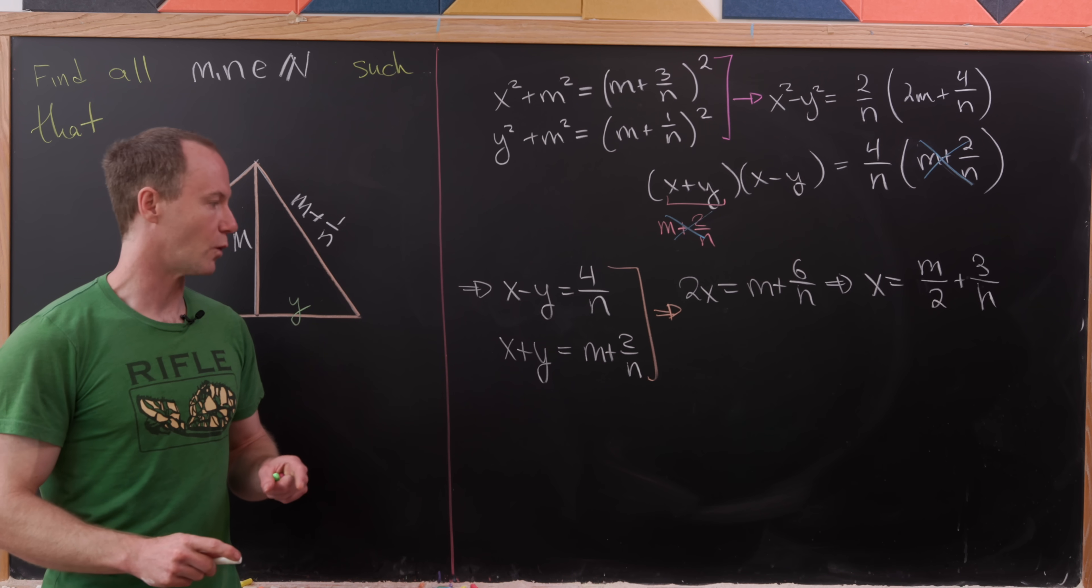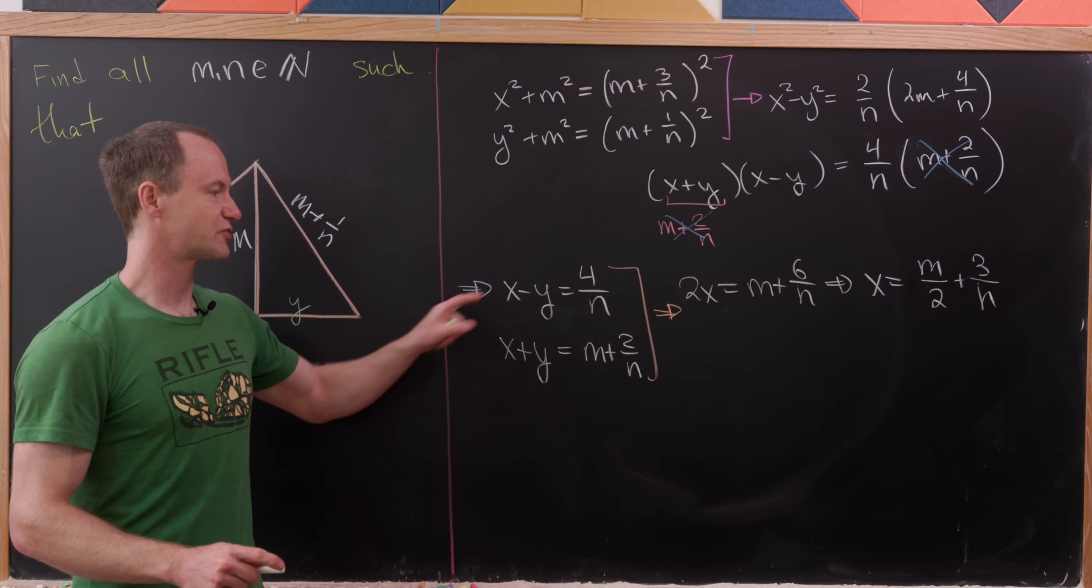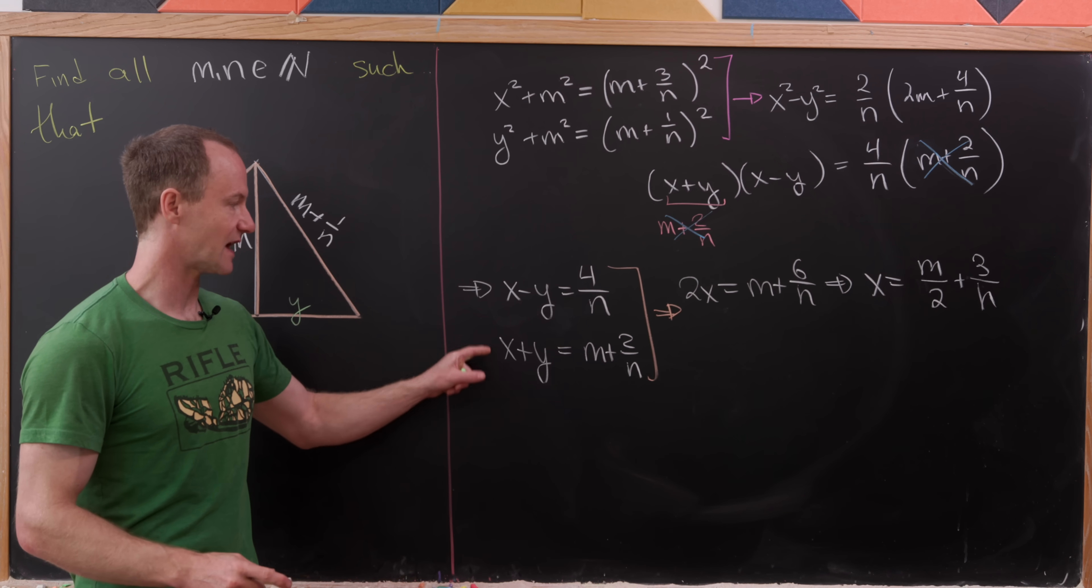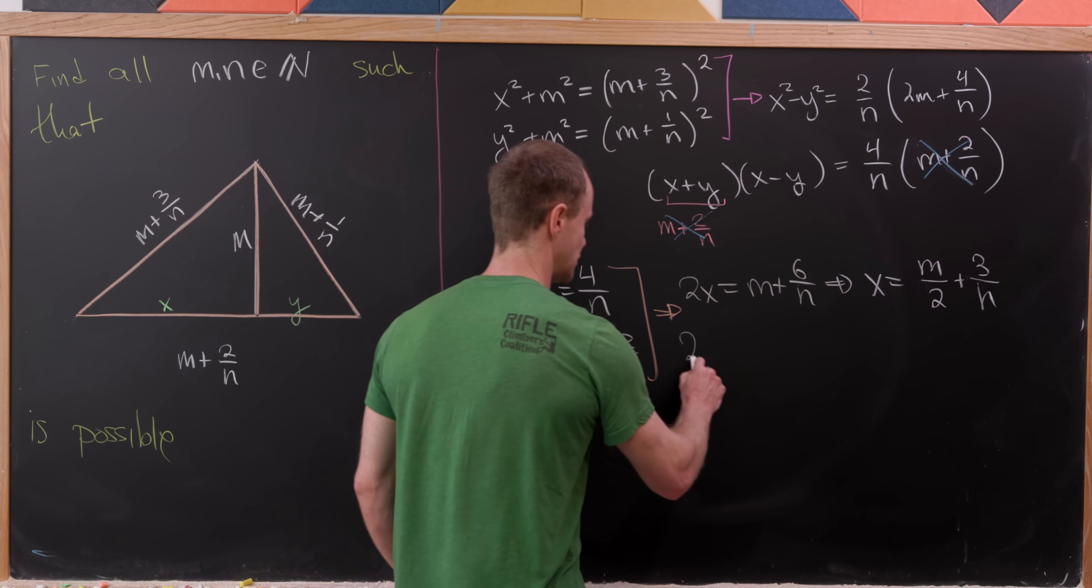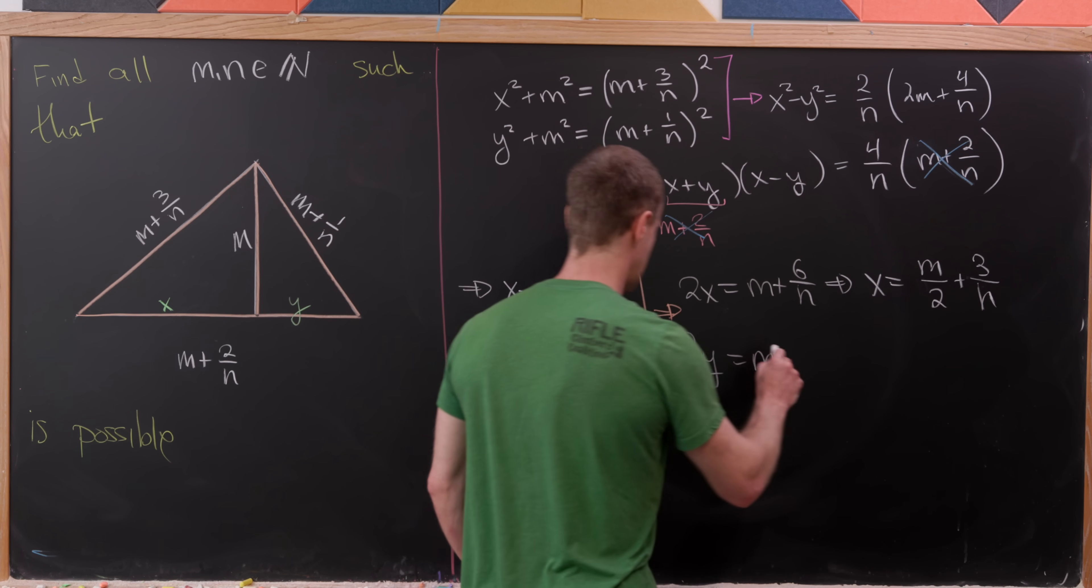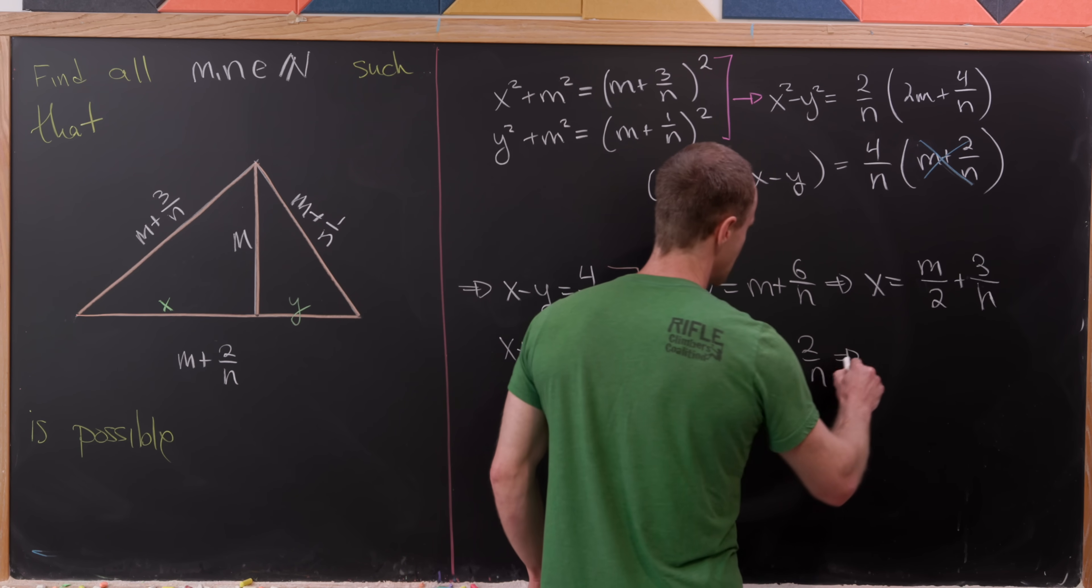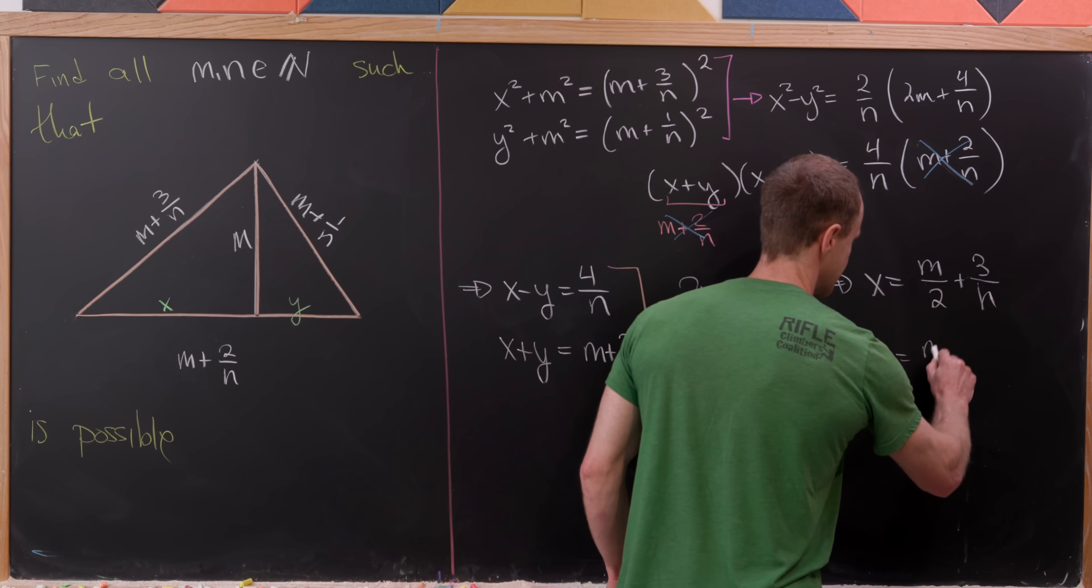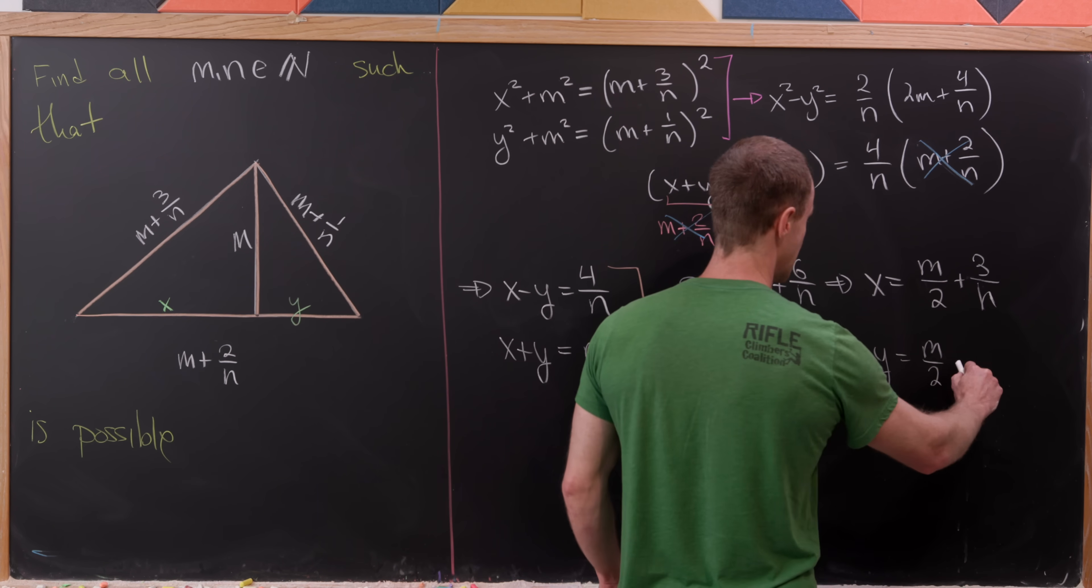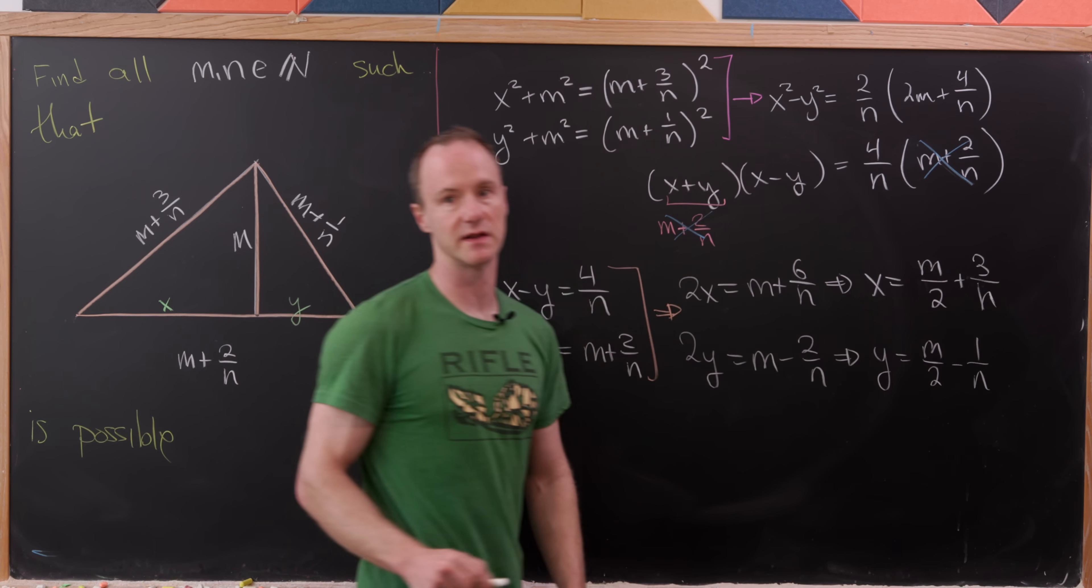What about for our y term? We can take the second equation and then subtract the first equation. That'll cancel out the x part. And that'll leave us with 2 times y equals m and then it'll be minus 2 over n. But of course, we can divide by 2 here and we'll have y equals m over 2 and then it'll be minus 1 over n when all is said and done.